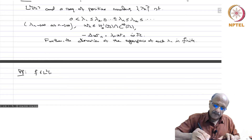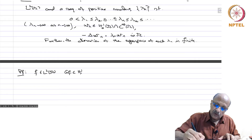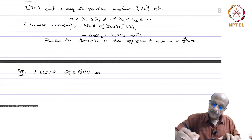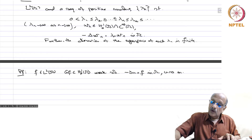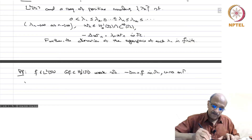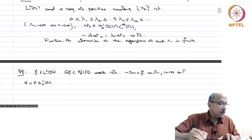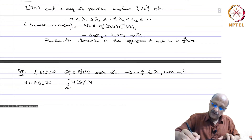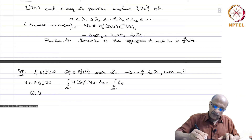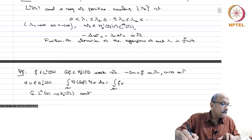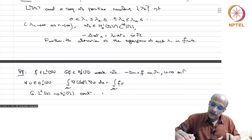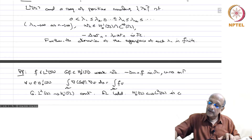For the proof: if f belongs to L²(omega), define G(f) in H¹₀(omega) as the weak solution of minus Laplacian u equals f in omega, u equal to 0 on gamma. Then for every v in H¹₀(omega), the integral over omega of grad G(f) dot grad v dx equals the integral over omega of f times v. G maps L²(omega) into H¹₀(omega) continuously. Since omega is bounded, H¹₀(omega) embeds compactly into L²(omega) by the Rellich-Kondrachov theorem.